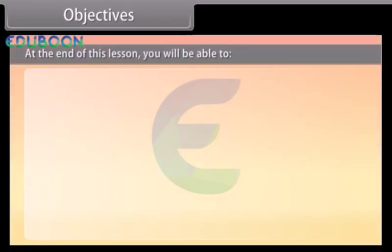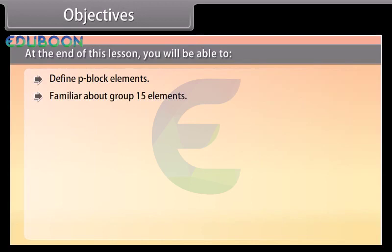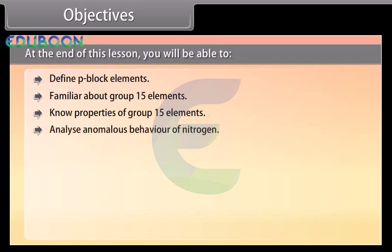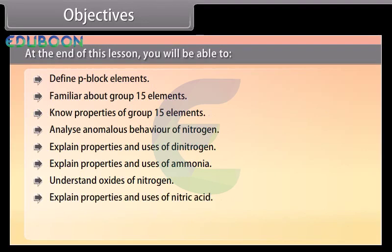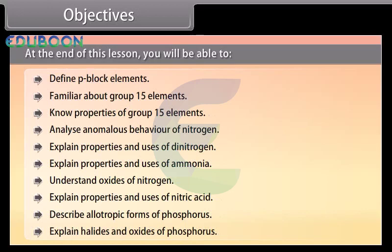At the end of this lesson, you will be able to: define P-block elements; become familiar with group 15 elements and know their properties; analyze the anomalous behavior of nitrogen; explain properties and uses of dinitrogen; explain properties and uses of ammonia; understand oxides of nitrogen; explain properties and uses of nitric acid; describe allotropic forms of phosphorus; and explain halides and oxides of phosphorus.